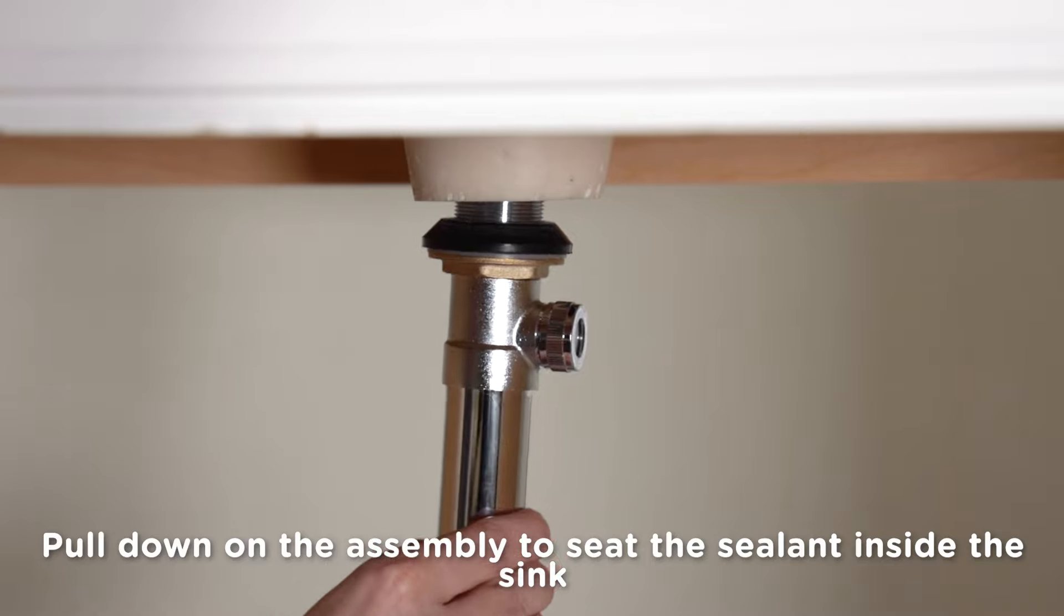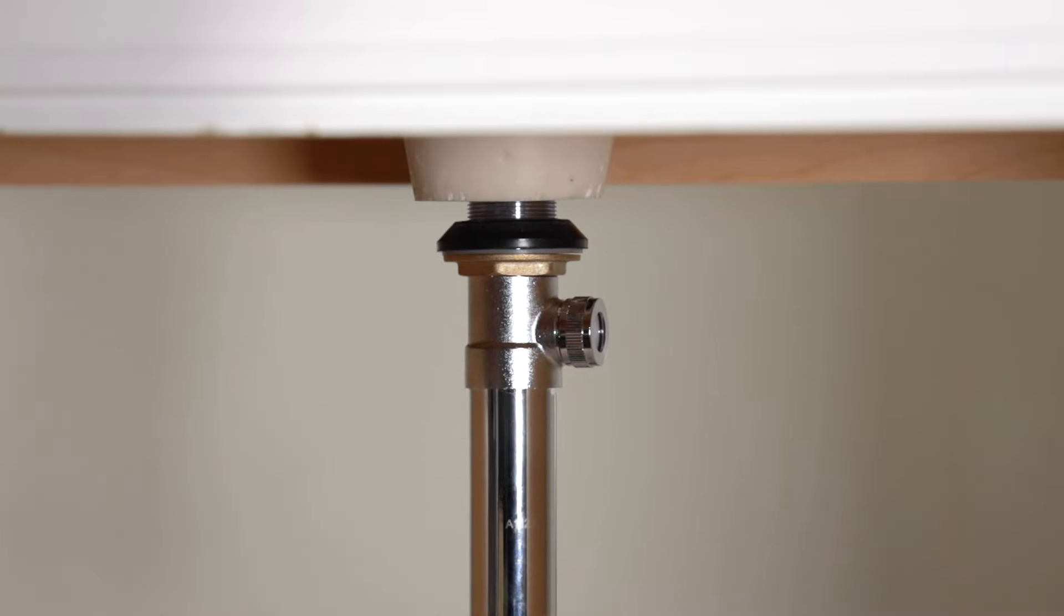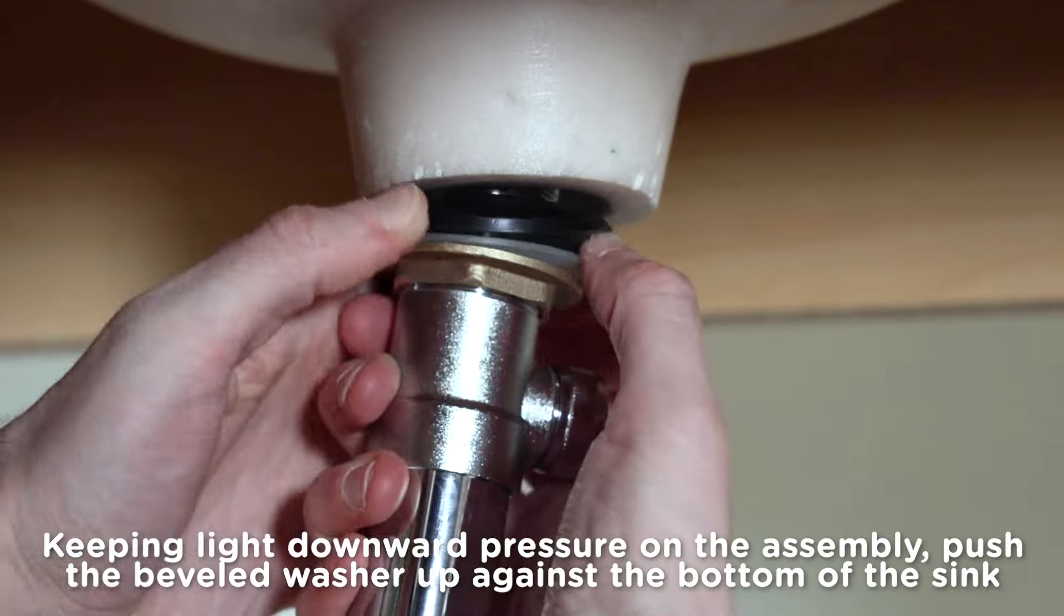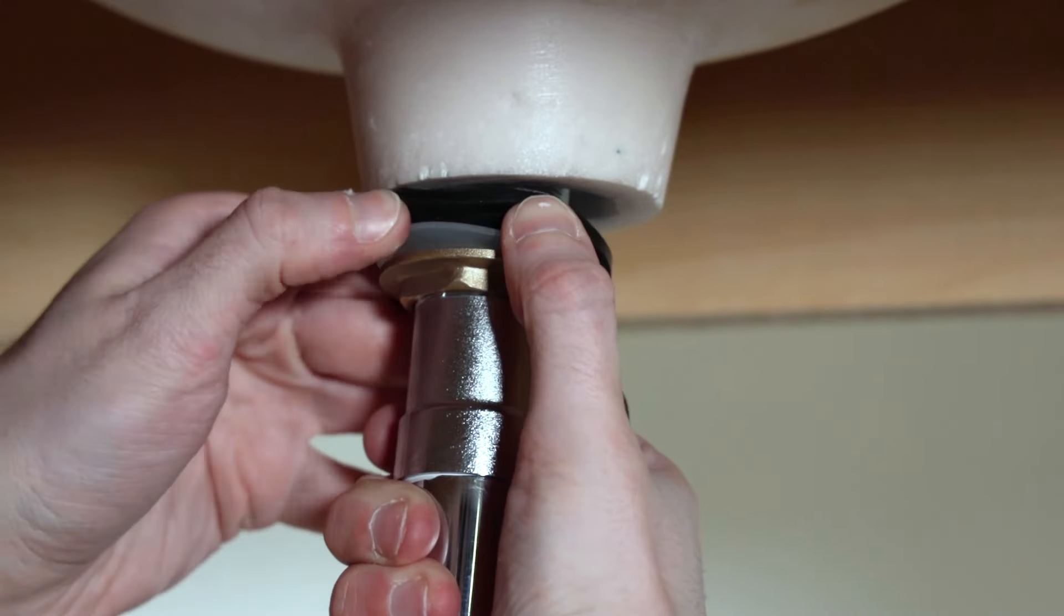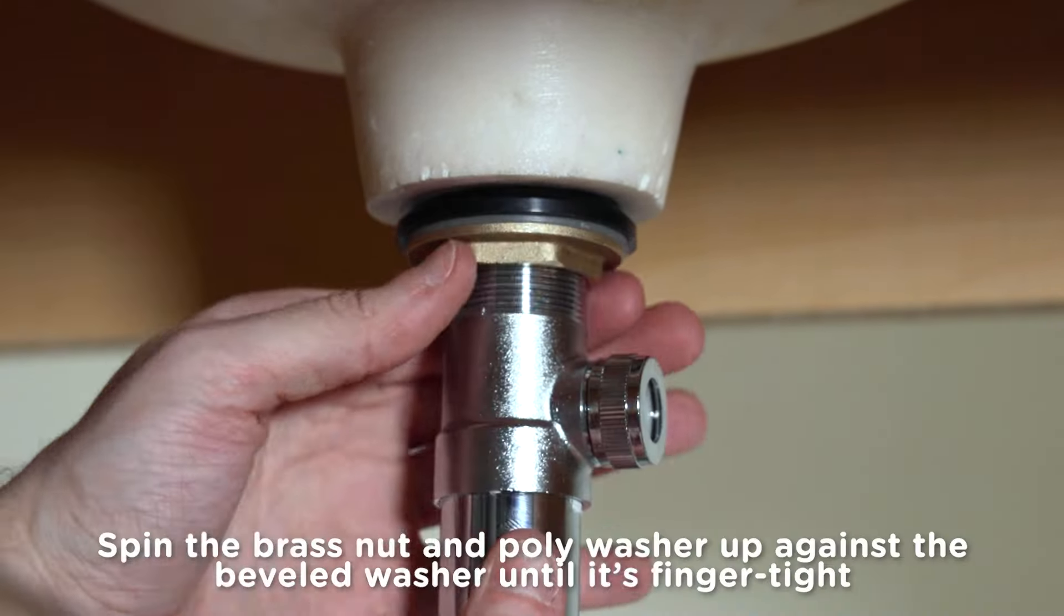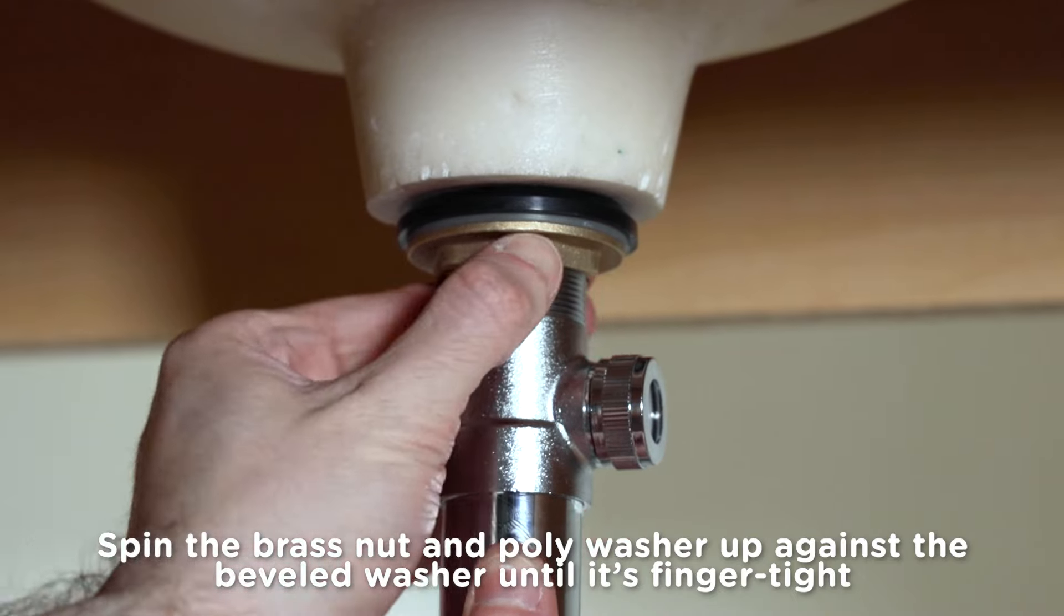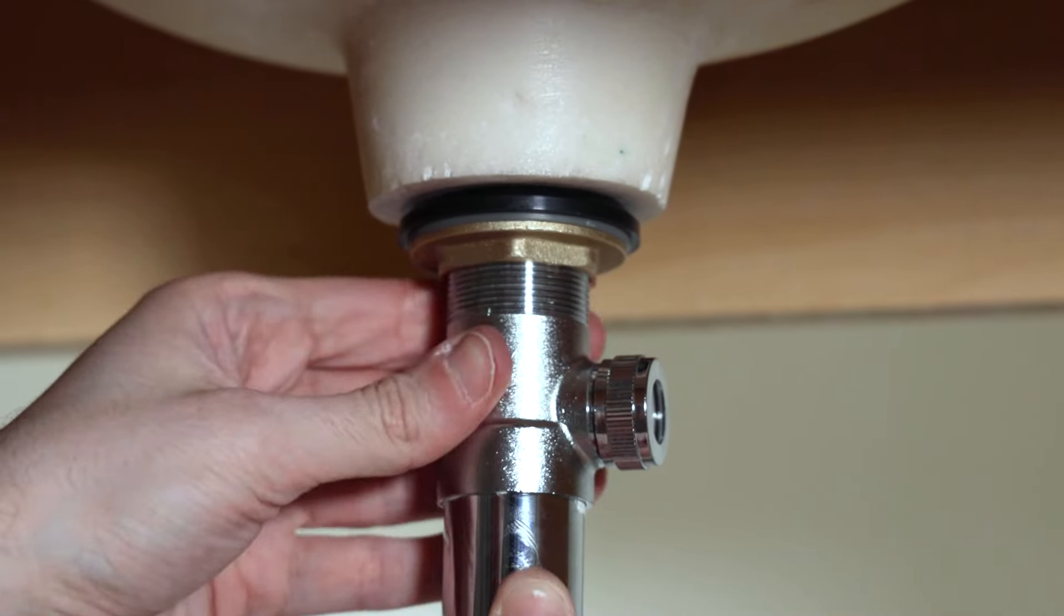From underneath, pull down on the assembly to seat the sealant inside the sink and keep light downward pressure on the assembly so you can push the beveled washer up against the bottom of the sink. Now, spin the brass nut and poly washer up against the beveled washer until it's finger tight.